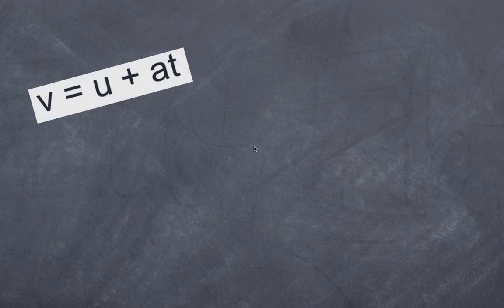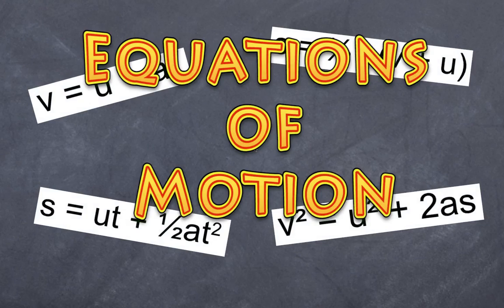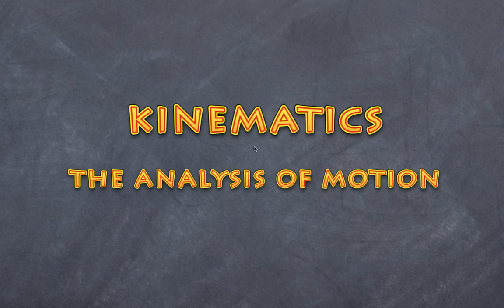Welcome to High School Physics Explained. Today I want to do a brief video about the equations of motion. The equations of motion are a number of equations used to determine various variables in the situation of kinematics — that is, measuring motion of some sort. We are simply interested in measuring displacement, velocity, acceleration, and time.